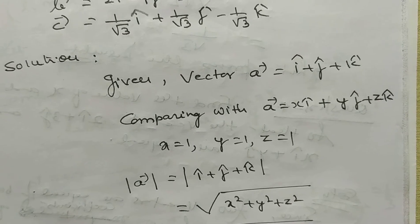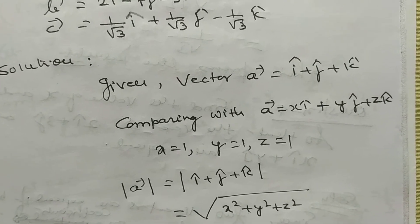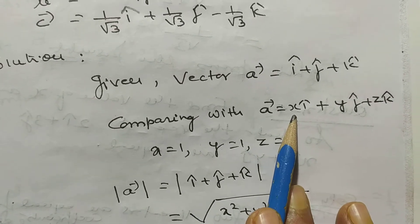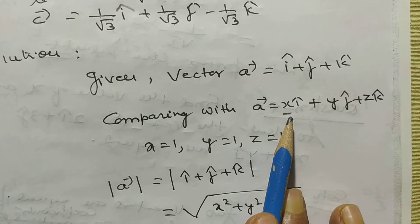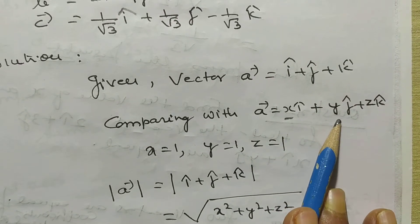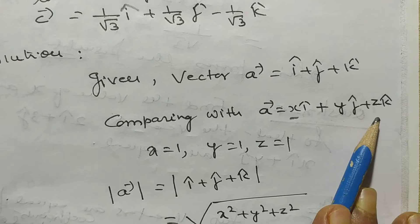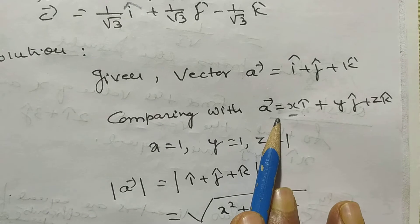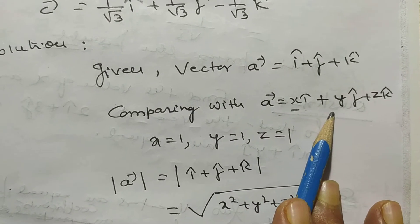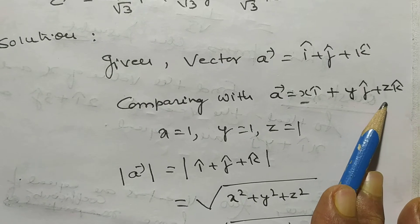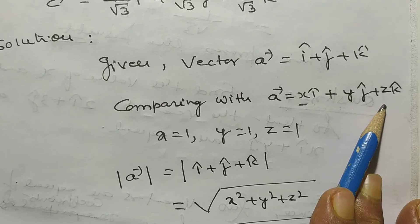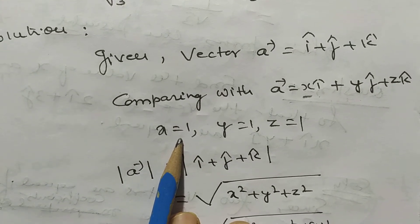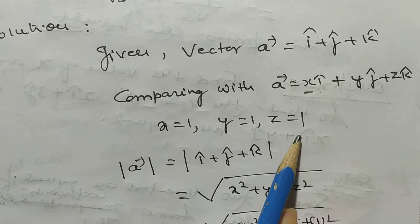We write the general form of the vector: Vector A equals xi plus yj plus zk, where x is the component along the x-axis, y is the component along the y-axis, and z is the component along the z-axis. i is the unit vector along the x-axis, j is the unit vector along the y-axis, and k is the unit vector along the z-axis. Comparing the coefficients, we have x = 1, y = 1, z = 1.